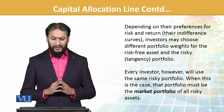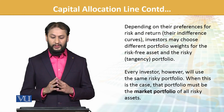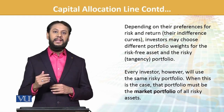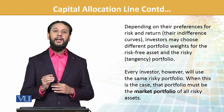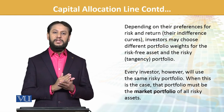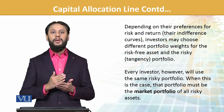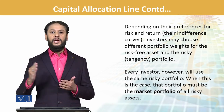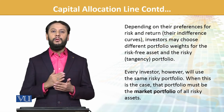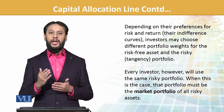Now investors don't have different CALs — there is only one CAL. The investor with lower risk will stay further back on the line, and the investor with higher risk appetite will move further ahead on the line. But the same line will be used for all investors. Everyone will move on that line based on their risk appetite.